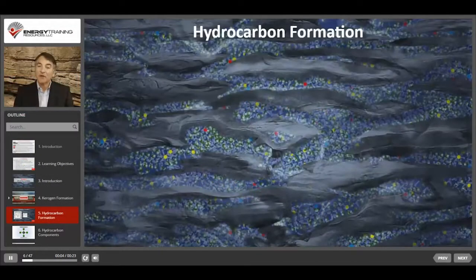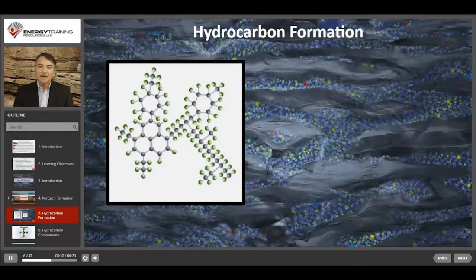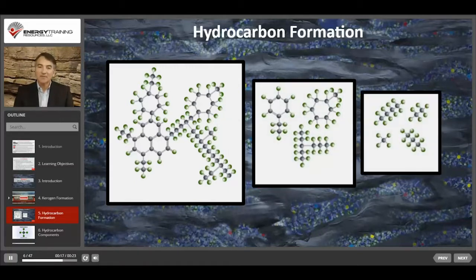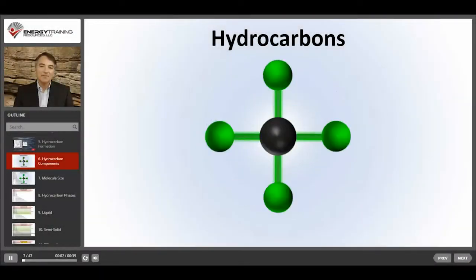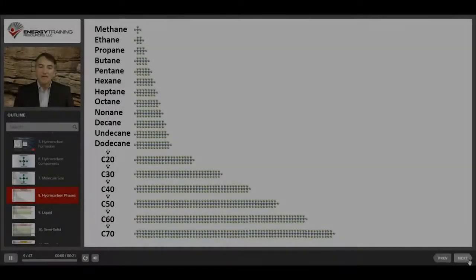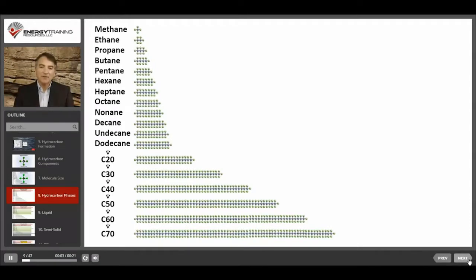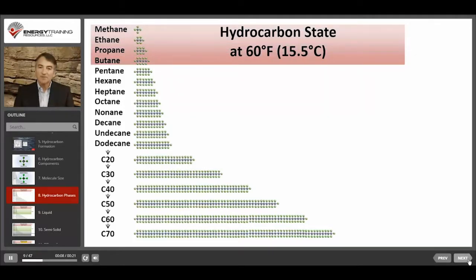Heat and pressure applied over a long period of time causes kerogen molecules to break down into smaller molecules called hydrocarbons. Hydrocarbon molecules may then break down over time into even smaller hydrocarbon molecules, and different sizes of molecules have different characteristics. The molecules are called hydrocarbons because they're composed of hydrogen atoms bonded with carbon atoms. If you look at these molecules at normal temperature, which we'll call 60 degrees Fahrenheit, the top four molecules, which are also the smallest and lightest molecules, are gases.